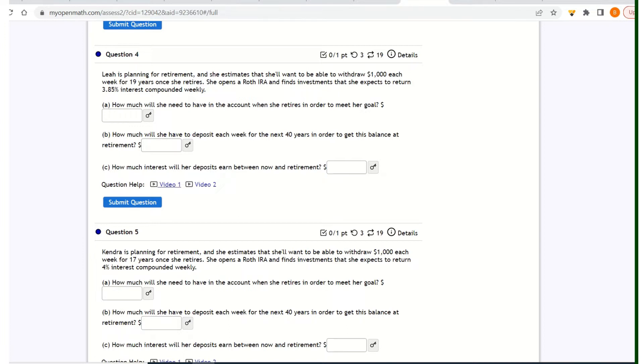So let's see if she wants to make $1,000 each week. I'm writing this stuff down for 19 years, and her interest rate will be 3.85% compounded weekly.